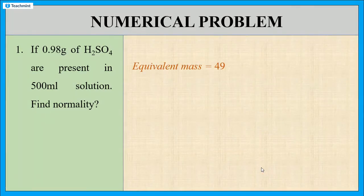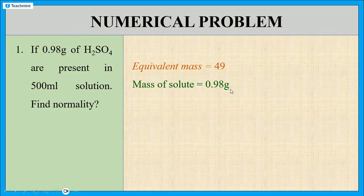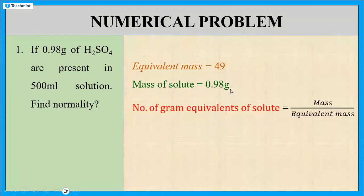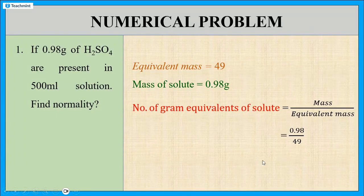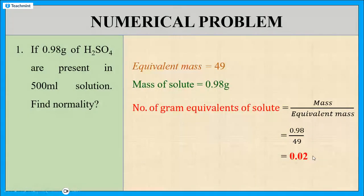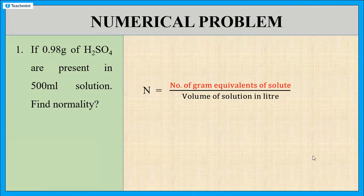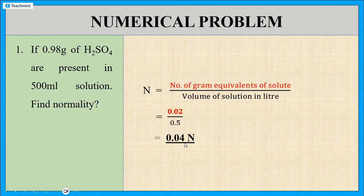Now we know the equivalent mass of sulphuric acid is 49, and the mass of sulphuric acid is 0.98 grams. The number of gram equivalents of solute equals mass divided by equivalent mass: 0.98 / 49 = 0.02. Substituting into the normality equation: N = 0.02 / 0.5, and the final answer is 0.04 N. N is the unit of normality.